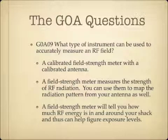What type of instrument can be used to accurately measure an RF field? The instrument you would use is a calibrated field strength meter with a calibrated antenna. A field strength meter measures the strength of RF radiation. You can use it to map the radiation pattern of your antenna and to find out how much RF energy is in your ham shack, thus helping you determine exposure levels.